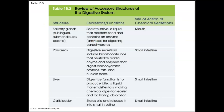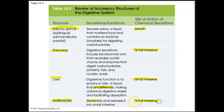Here's a summary table of the accessory structures of the digestive system. Salivary glands secrete saliva — this moistens food and contains the enzyme amylase for digesting carbohydrates; site of action is the mouth. The pancreas secretes ions that neutralize acidic chyme and enzymes that digest carbohydrates, proteins, fats, and nucleic acids; site of action is the small intestine. The liver produces bile — a liquid that emulsifies fats to facilitate absorption; target is the small intestine. The gallbladder stores bile and releases it into the small intestine.